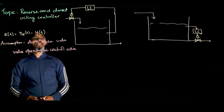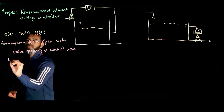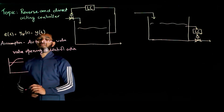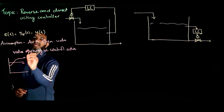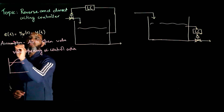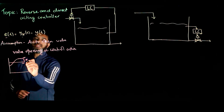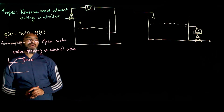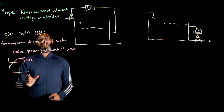What is direct acting and what is reverse acting? Think about driving a car where your desired speed limit is set and somehow your speed goes beyond this value. This is your measured variable and this is your desired value — your set point. Error is defined as Y set point minus Y, so when the output goes beyond the set point, this error is negative.